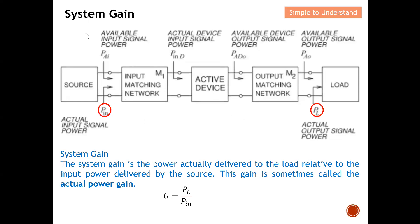System gain is simply PL over Pin. System gain is the actual power delivered to the load relative to the input power delivered by the source. The power generated by the source over the power delivered to the load gives us the system gain — also sometimes called the actual power gain.